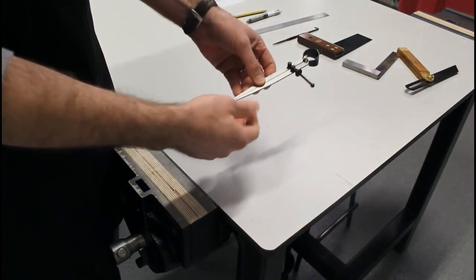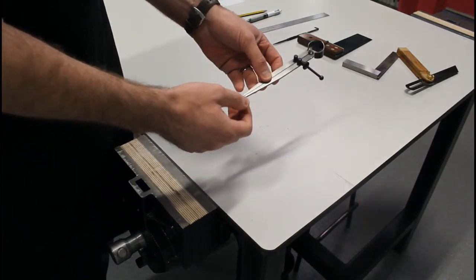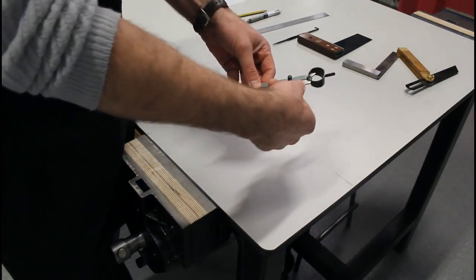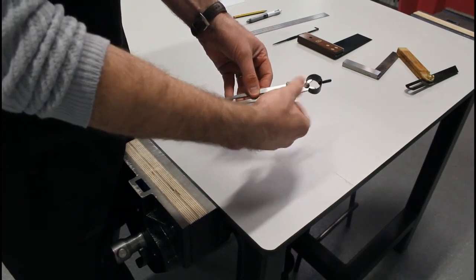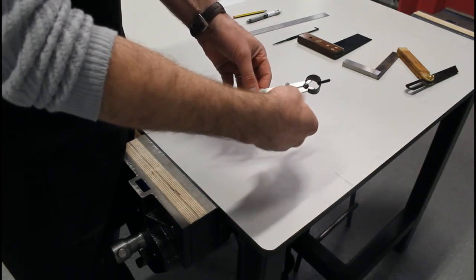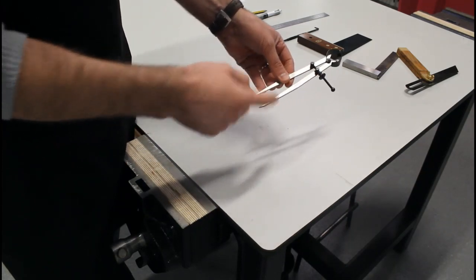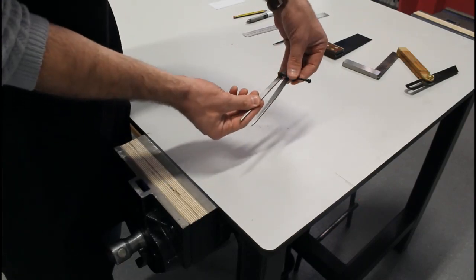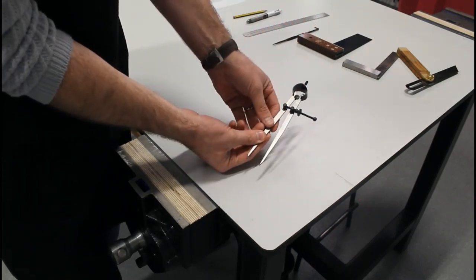Our last marking out tool is known as a dividers. So we can twist this nut here and it brings out these two legs. And it's quite similar to a compass.